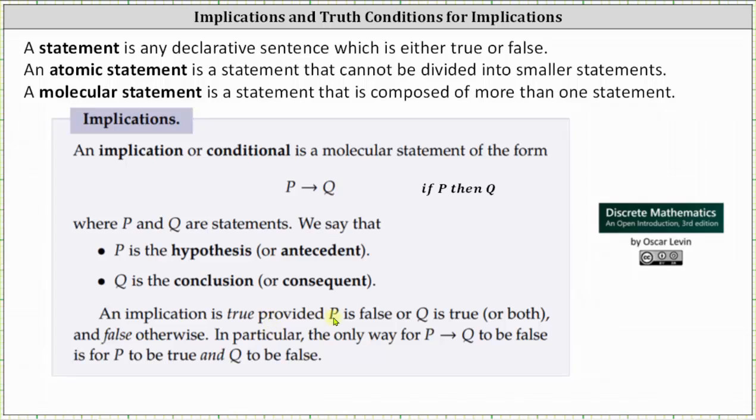An implication is true provided that P is false, or Q is true, or both are true, and false otherwise. This means the only way if P then Q is false is for P to be true and Q to be false. Otherwise, the implication is true.